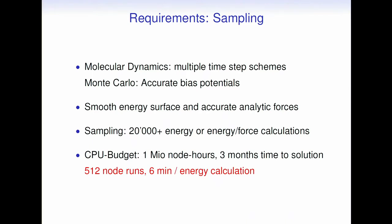What does that mean in practice? Nowadays, if you go to a high-performance computing facility like PRAISE, you can easily get a CPU budget of one million node hours. If you want to use this for these calculations and spend it in three months — running on 512 nodes — that means roughly one RPA or MP2 calculation every six minutes. That's our goal.